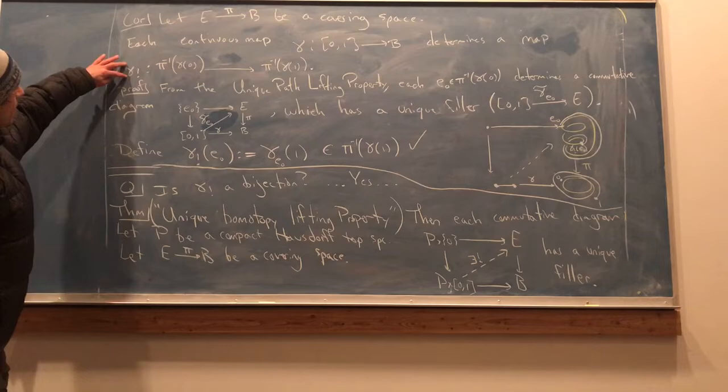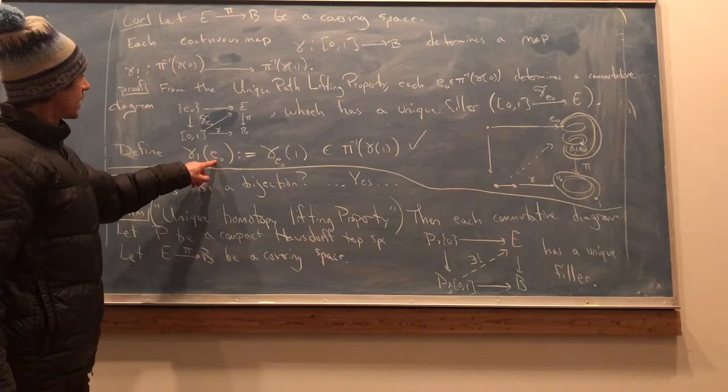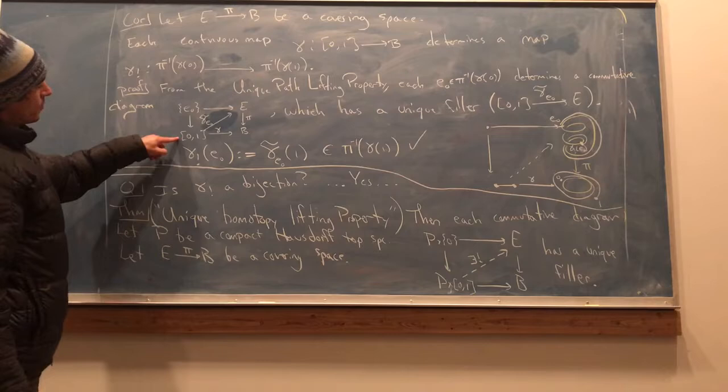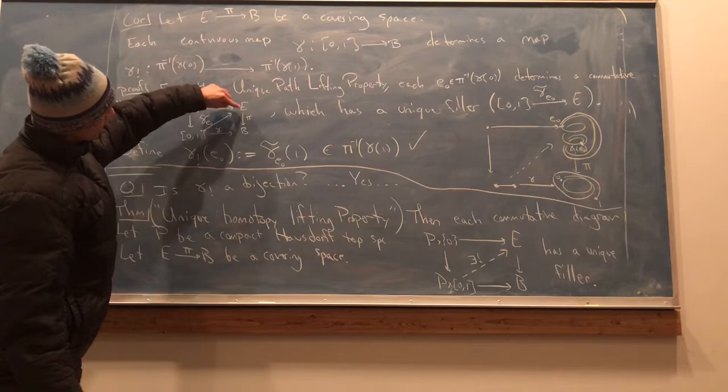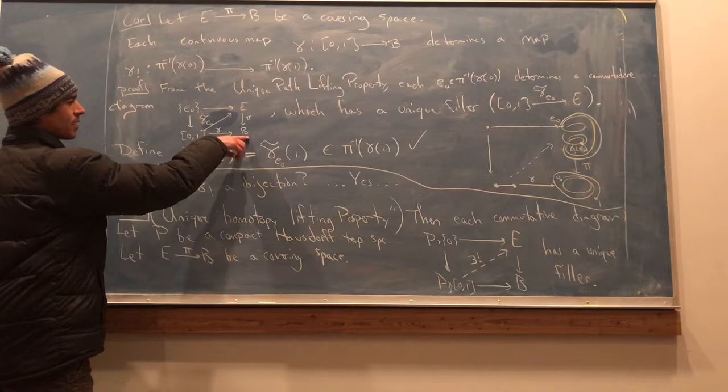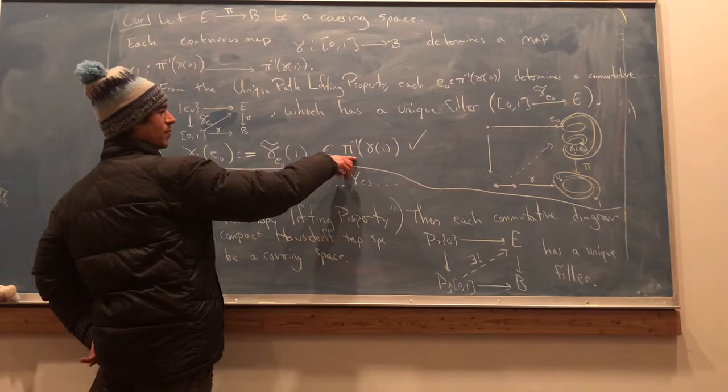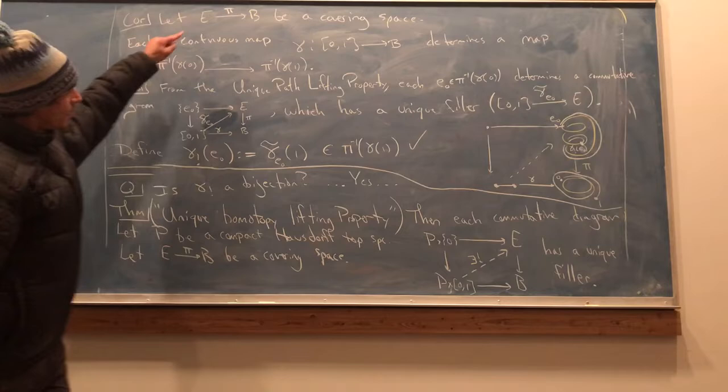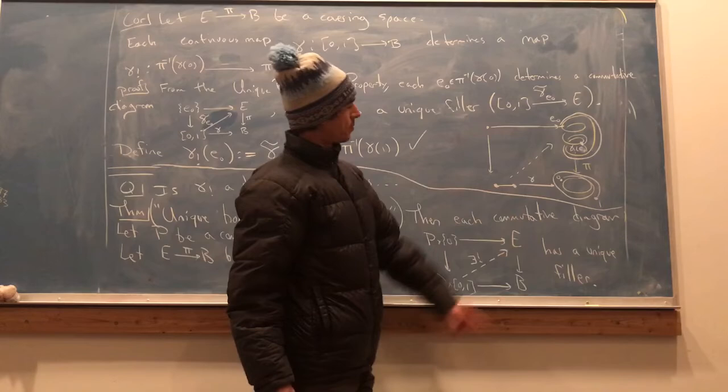Okay, so define gamma lower shriek to simply be, so that it evaluates on each element in the domain, each E naught, as the time one value of this unique lift. Because this lower triangle commutes, you know the time one value of this path will project down by pi to the time one value of gamma. In other words, the time one value will belong to pi inverse gamma of one. That's what we wanted to do. We just define the map, a way of assigning to every element in here an element over there.